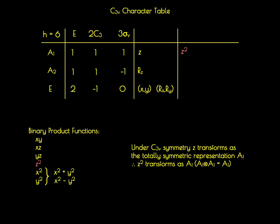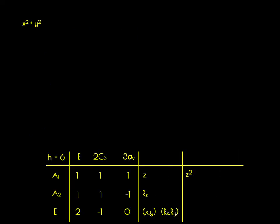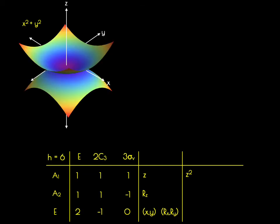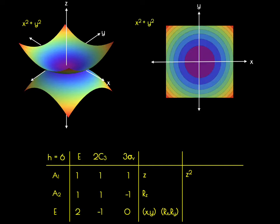We're now going to describe the other five binary product functions, starting with the x²+y² function. In three-dimensional space, this function looks like a double parabolic shape. We can replot this in two dimensions looking at the xy plane. This plot emphasizes the fact that x²+y² is the function for a circle, which is totally symmetric with respect to all operations in the C3V point group. Therefore, x²+y² also transforms as the A1 representation.